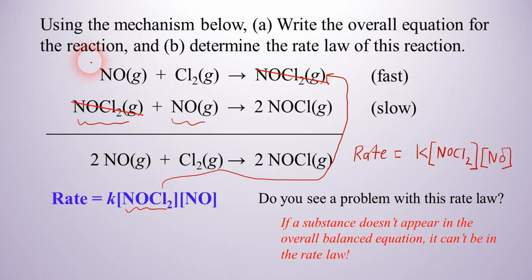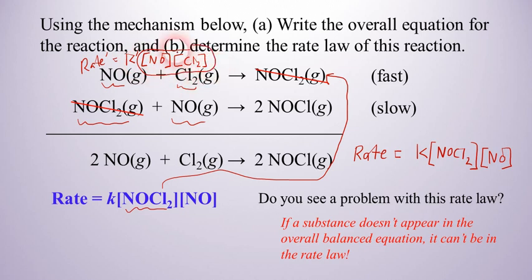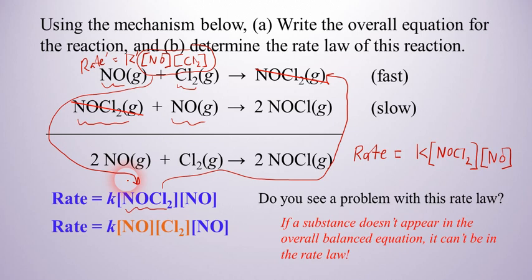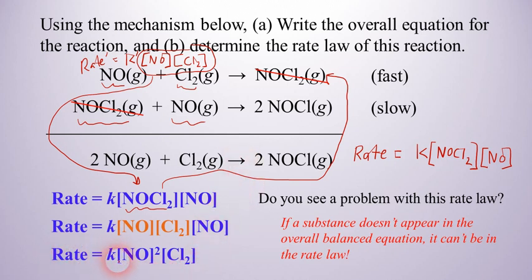So that rate law would be rate equals K times NO, the first reactant, times Cl2, the second reactant. Now all we have to do is take the NO and the Cl2 and plug this in for NOCl2. This NO is going to combine with the other NO to make NO squared. So here is the actual rate law for the reaction: rate equals the rate constant times NO squared times Cl2. This is a more difficult problem where you have to write a rate law from the mechanism.